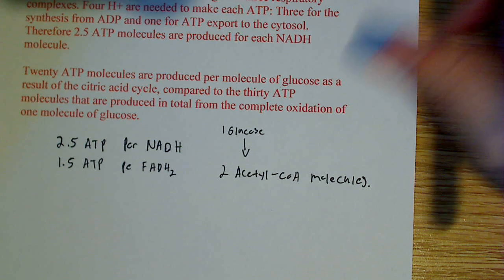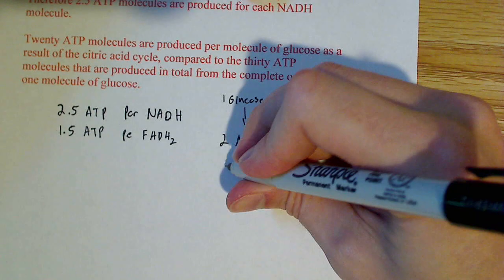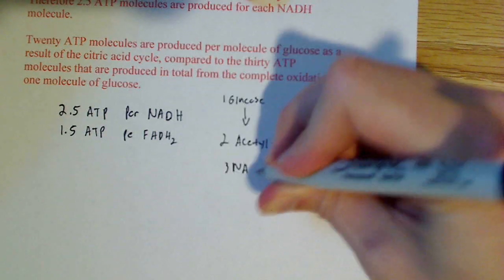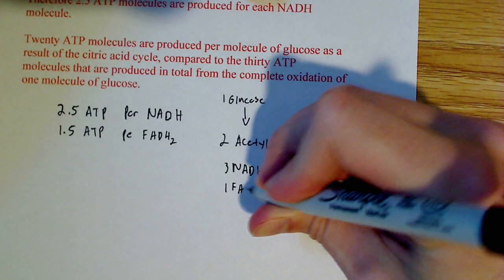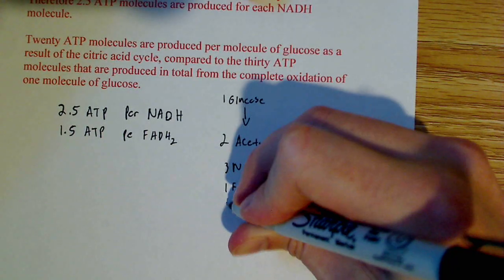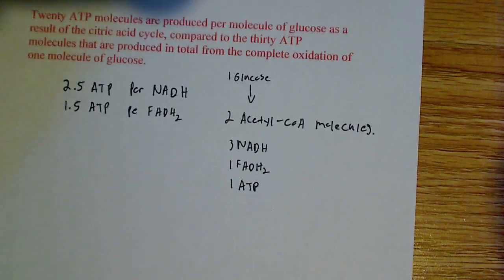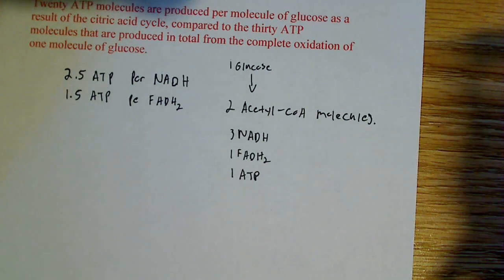Now, one turn of the citric acid cycle produces 3 NADH, one FADH2, and one ATP from GTP. From GTP, you produce one ATP.